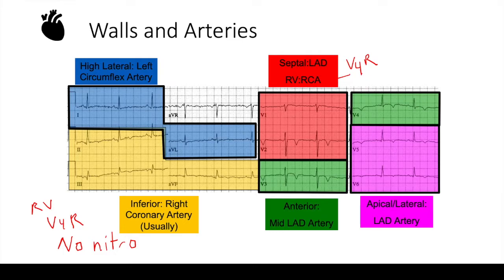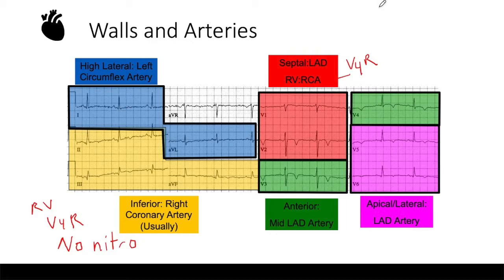If there are ST elevations in both V5, V6 and 1 and AVL, it's probably both LAD and left circumflex. ST elevations in AVR are also significant, especially when you have other reciprocal changes in other leads, so always look at AVR as well — even though it's opposite to everything else, it can be pathologic. This is a busy slide with a lot to memorize, but honestly it's easier just seeing more and more EKGs — after seeing several NSTEMIs and STEMIs, you'll get a hang of which leads correlate to which artery and wall.